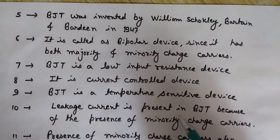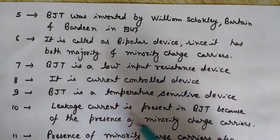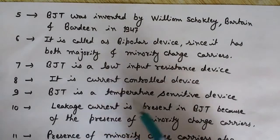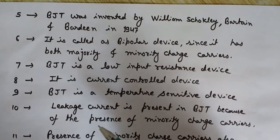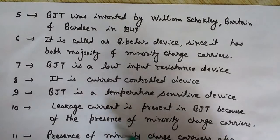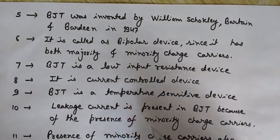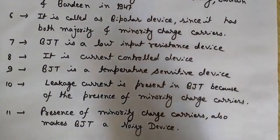Leakage current is present in BJT because of the presence of minority charge carriers. When temperature increases, this leakage current also increases since it is temperature dependent. This leakage current is known as the reverse saturation current.